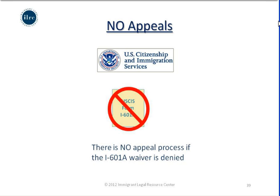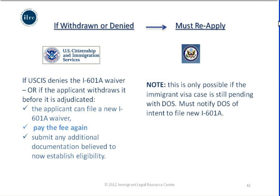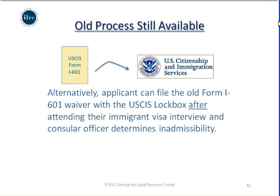If USCIS denies the I-601A waiver or the applicant withdraws it before adjudication, the applicant can either file a new I-601A waiver — which requires payment of the fee again along with any additional evidence — provided the immigrant visa case is still pending with the Department of State. Alternatively, the applicant can file the traditional I-601 waiver with the USCIS lockbox after attending their immigrant visa interview and after the consular officer determines a ground of inadmissibility.